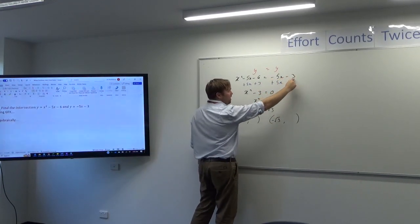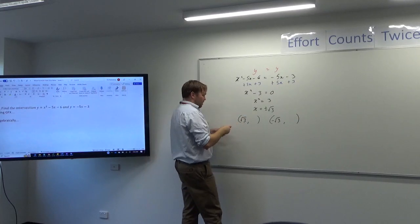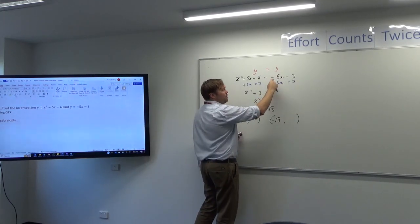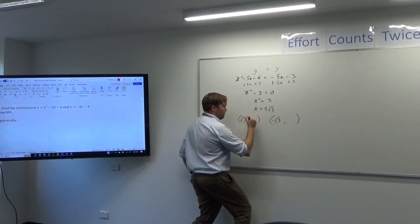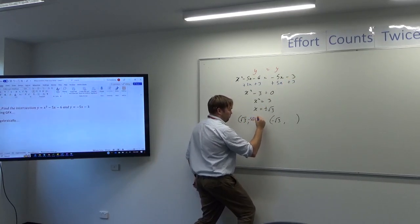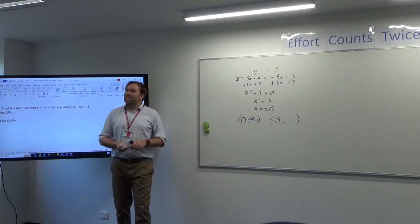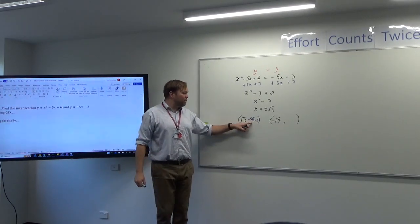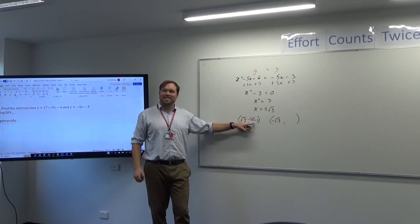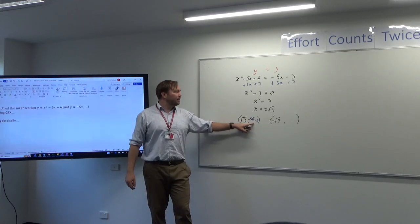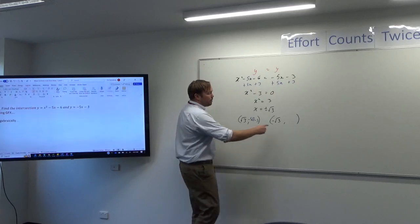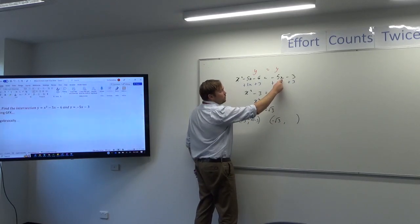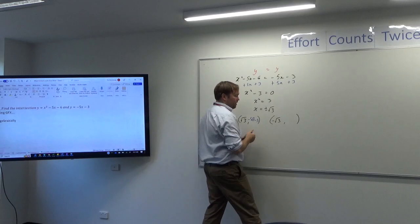You can either let the x be root 3 in this one or this one. I'd probably go this one, easier. If we let x be root 3 here, there's not a lot we can do to simplify it. It's going to be minus 5 root 3 take 3. It's not pretty, but there's no way we can put those numbers in a nicer way together. That's in simplest form already. If we put in minus root 3 to here, minus root 3 to here will end up being positive 5 root 3 take 3.